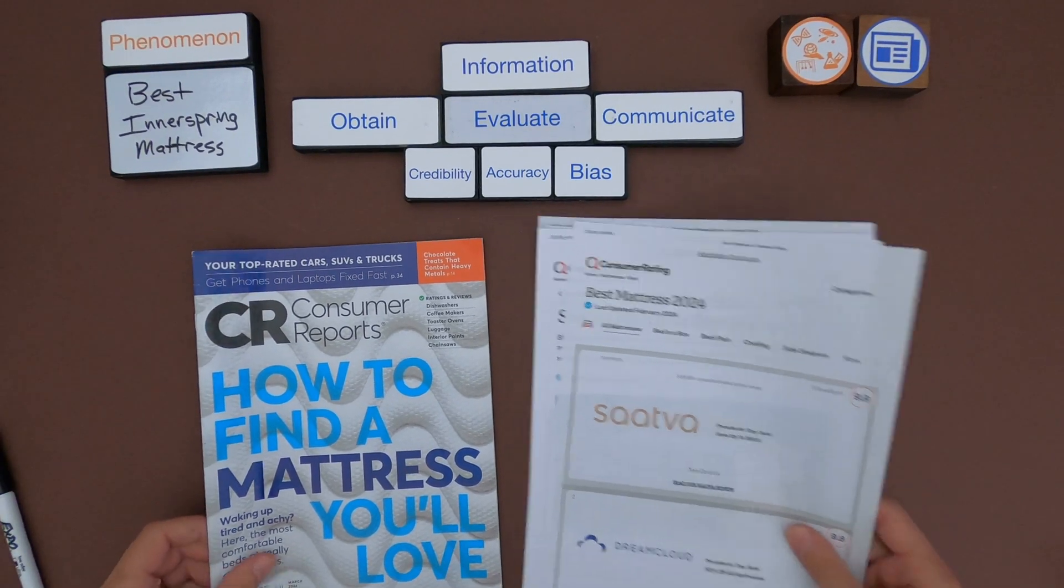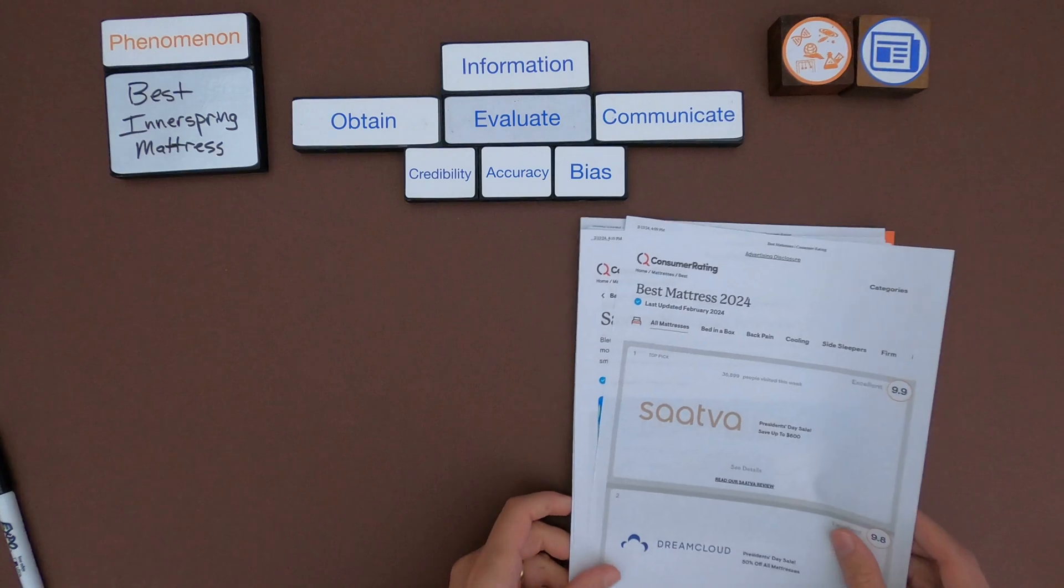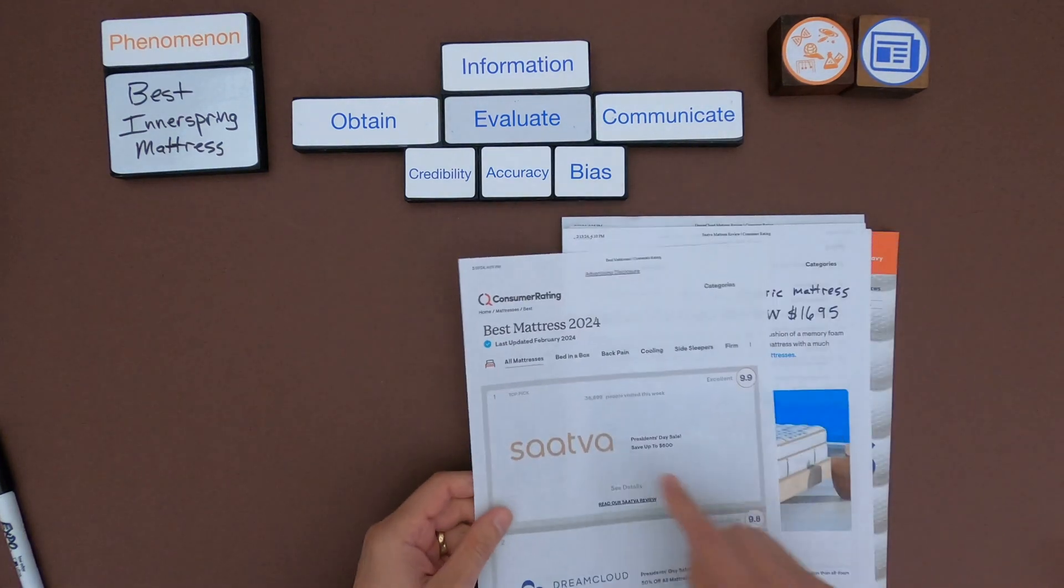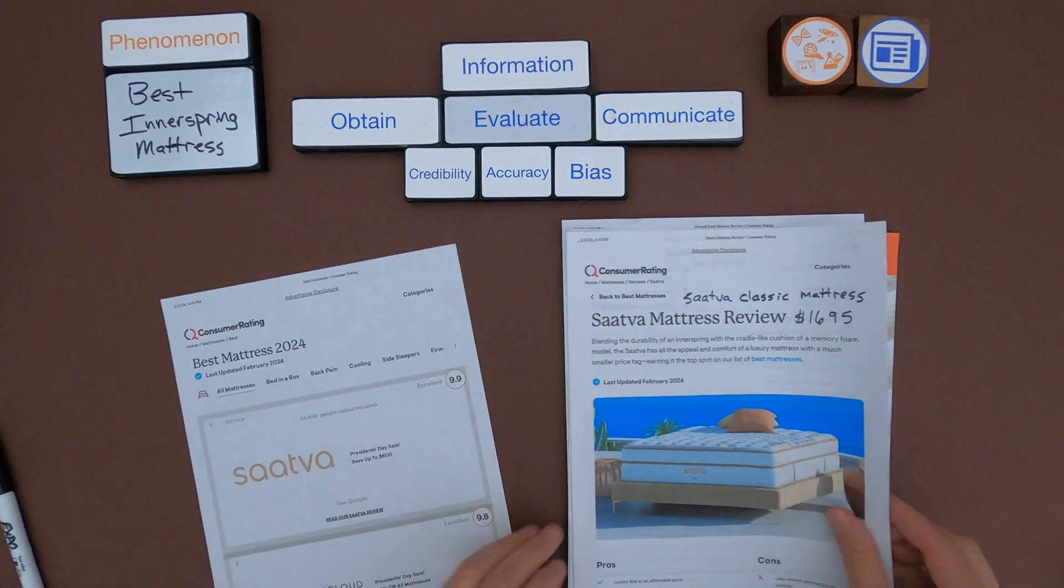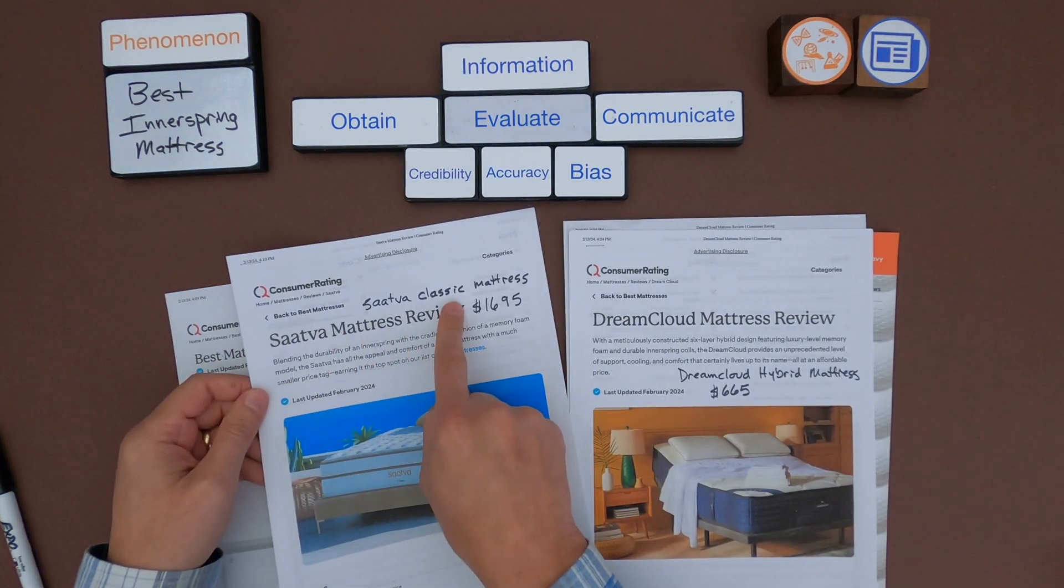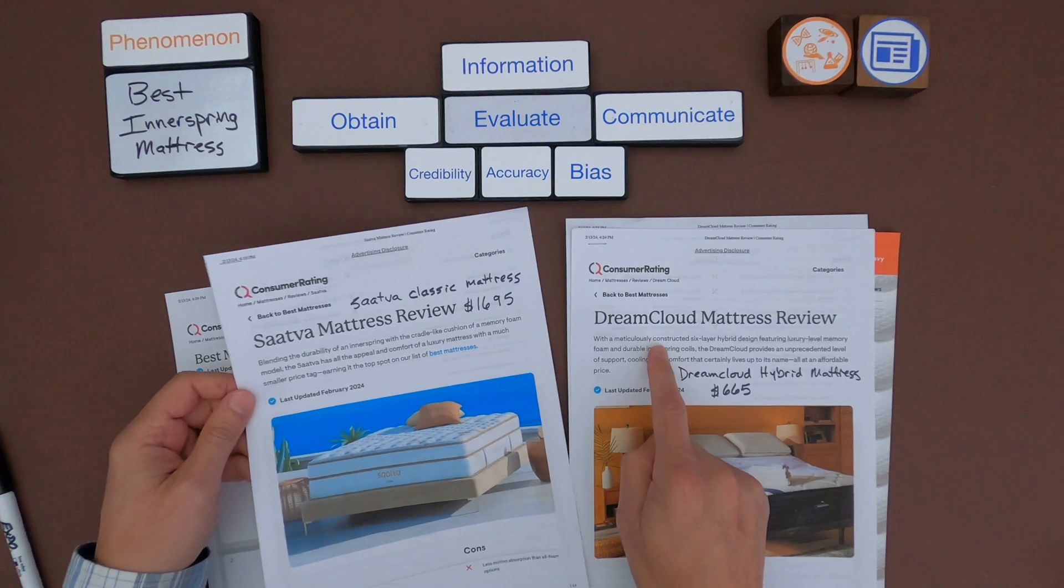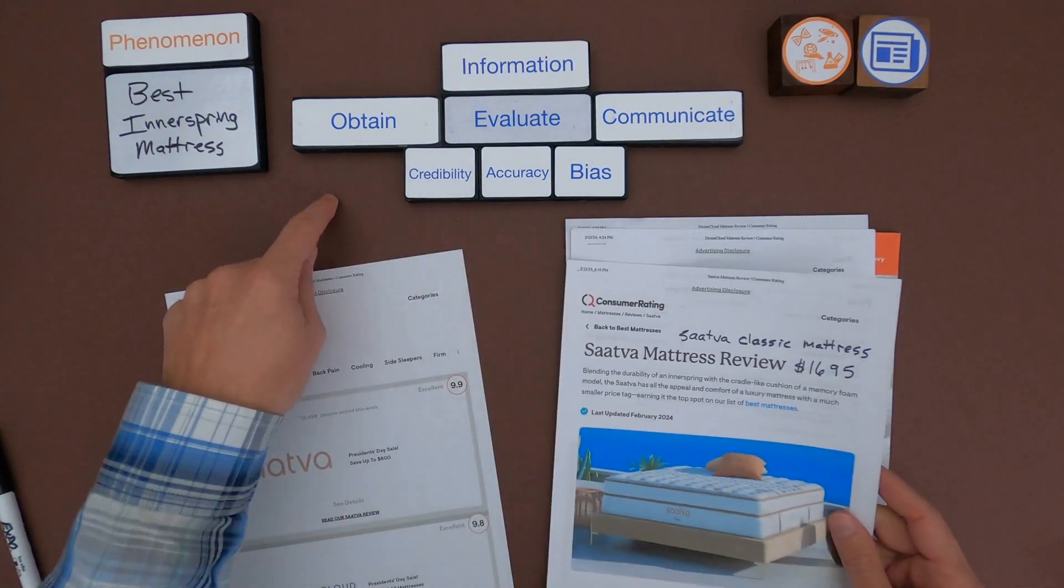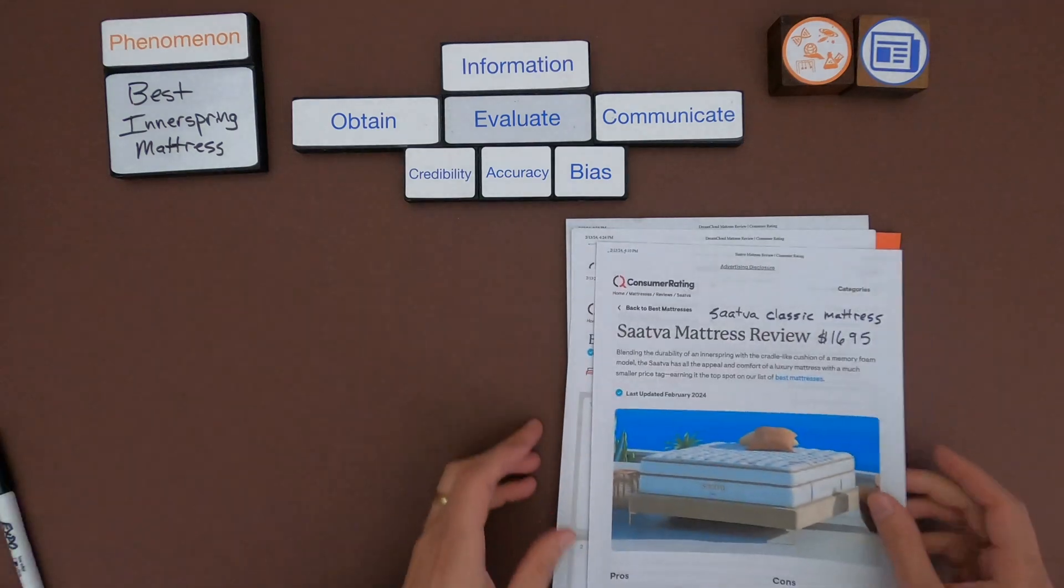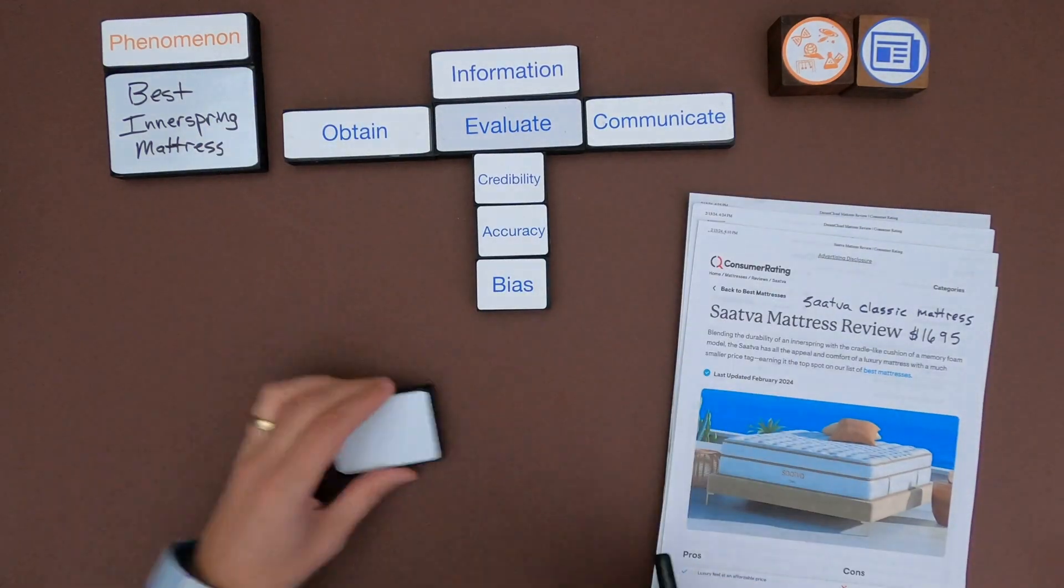So the first thing, if we start with, let's just start with consumer rating. So the two top mattresses are the Saatva and the DreamCloud. And then there's a link to those two reviews of both the Saatva Classic mattress and the DreamCloud mattress. So what I'm going to do is just obtain some information from each of these that I think would be relevant.